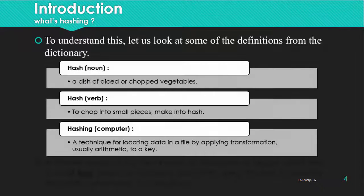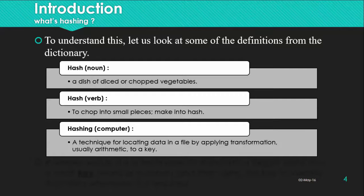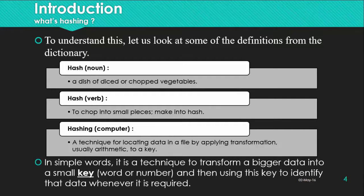To understand the meaning of the concept, let's look inside the dictionary. As a noun, a hash is a dish of diced or chopped vegetables — making vegetables into smaller pieces. To hash something as a verb is to chop it into small pieces. In computing, hashing is a technique for locating data in a file by applying a transformation — usually arithmetic — to a key. In simple words, it transforms data into a small key, which could be a word or a number, and then uses this key to identify that data whenever you require it inside your program. You will have a hash function that receives the key as input and gives you the address of the required data.